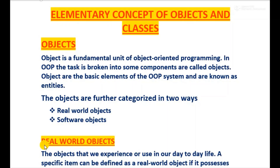Hello class 9th. Through this video I am going to explain the second chapter, that is elementary concept of objects and classes. In the previous chapter you learned about object oriented programming and its principles such as data abstraction, encapsulation, polymorphism and inheritance. An object oriented programming language not only concentrates on these features but also has two more basic units: objects and classes.